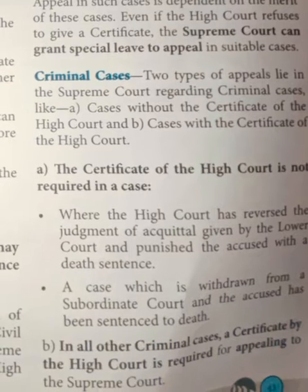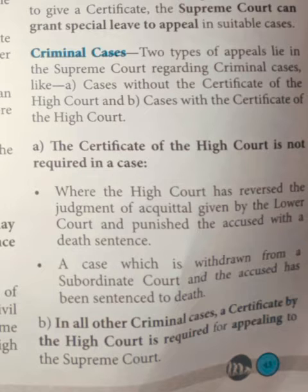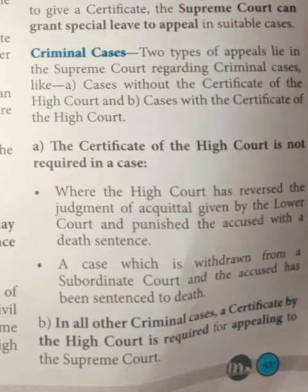Criminal cases: Two types of appeals lie in the Supreme Court regarding criminal cases — cases without the certificate of the High Court, and cases with the certificate of the High Court. The certificate of the High Court is not required when the High Court has reversed the judgment of acquittal given by the lower court and punished the accused with a death sentence, or when a case is withdrawn from a subordinate court and the accused has been sentenced to death. In all other criminal cases, a certificate from the High Court is required for appealing.